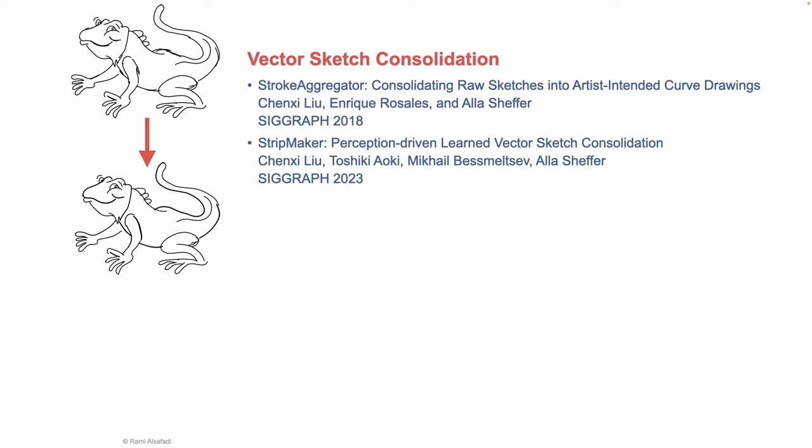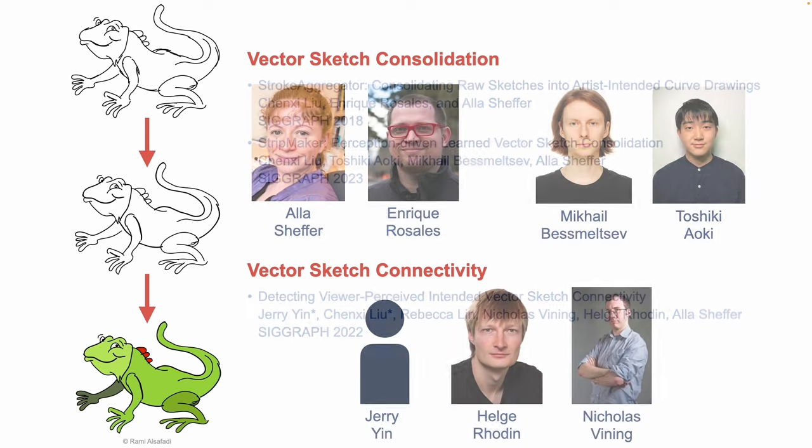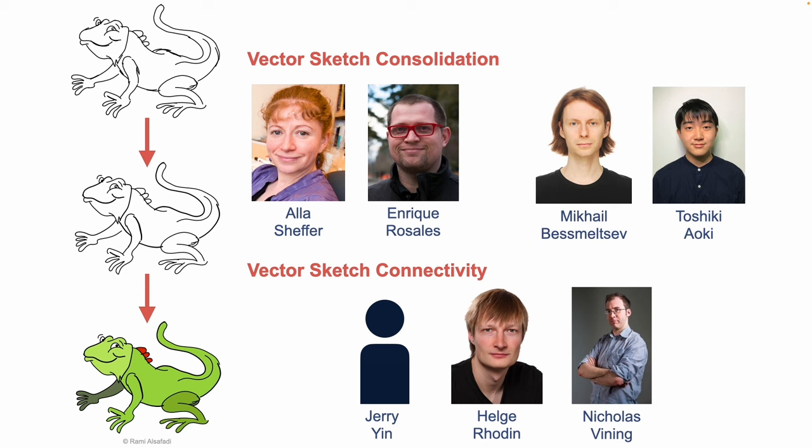Together, our approaches form a pipeline capable of cleaning up a raw vector sketch, a process we call consolidation, then determining accurate connectivity for applications such as colorization. This resulting papers will publish with the help of my amazing co-authors.